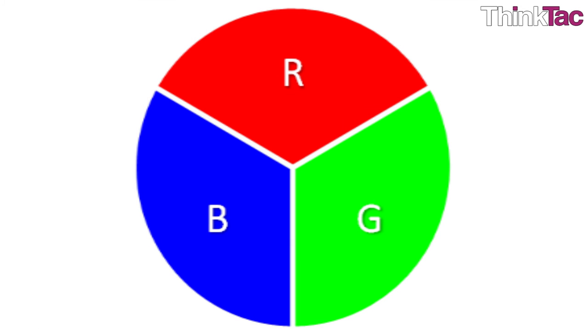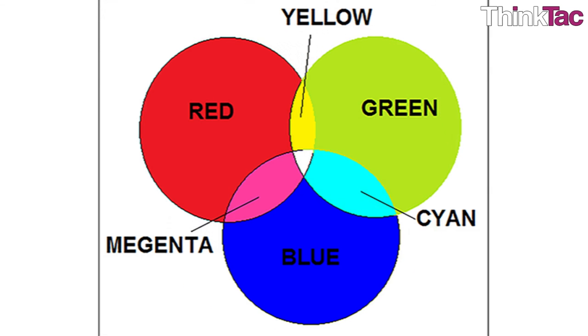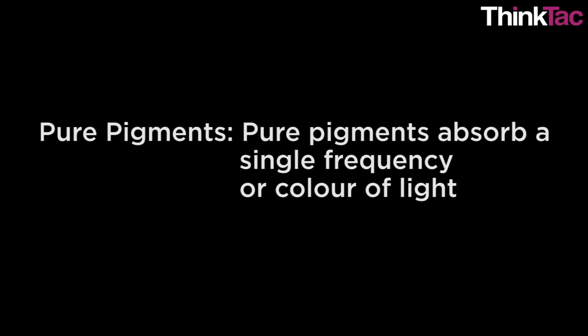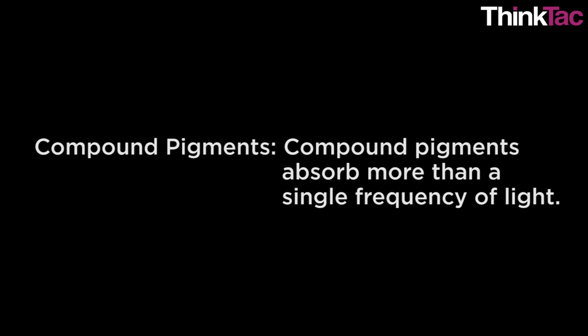Primary colors are those which cannot be created by mixing other colors in a given color space. A color resulting from the mixing of two primary colors is called a secondary color. Pure pigments absorb a single frequency or color of light. Compound pigments absorb more than a single frequency of light.